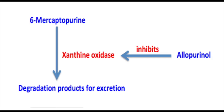When allopurinol is used to inhibit xanthine oxidase to decrease uric acid in gout, and the patient is also taking 6-mercaptopurine, you have to be careful. Because our body uses xanthine oxidase for the catabolism and detoxification of 6-mercaptopurine. If the person is on allopurinol, the dose of 6-mercaptopurine has to be lowered to prevent toxic effects.